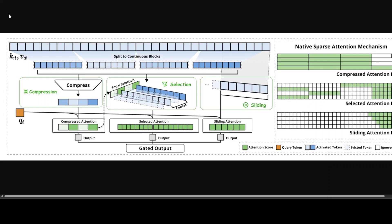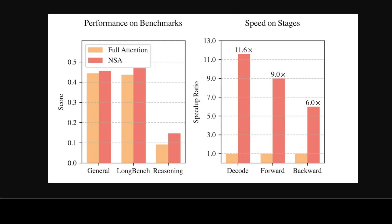There is also a comparison of performance and efficiency between the full attention model and NSA. Despite being sparse, NSA surpasses the full attention baseline on average across general benchmarks, long-context tasks, and reasoning evaluations. For 64k length sequence processing, NSA achieves substantial computational speed-up compared to full attention.